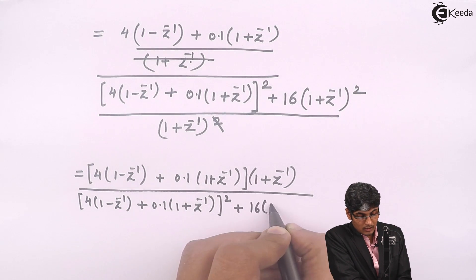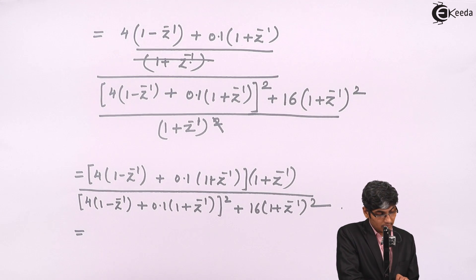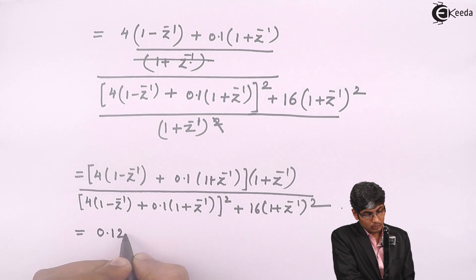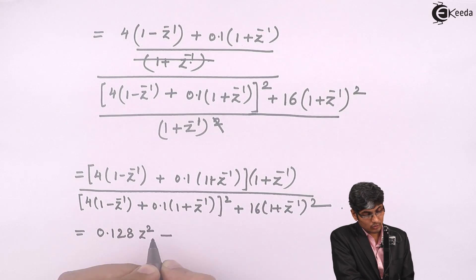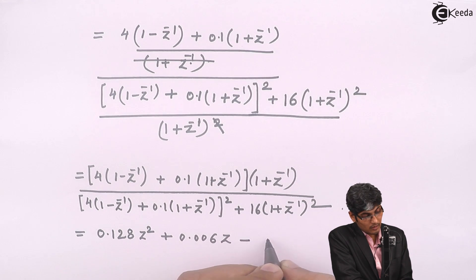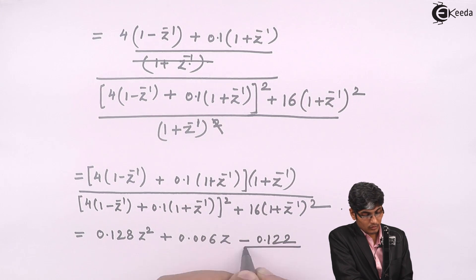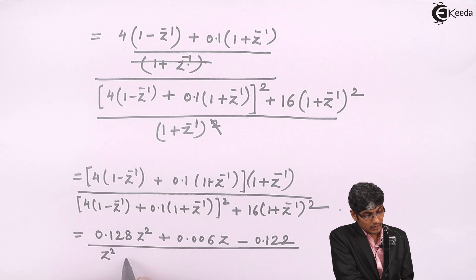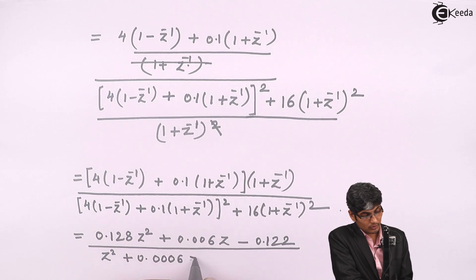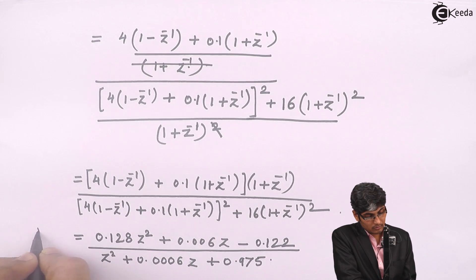And the final answer of this equation will be 0.128 Z inverse to Z square plus 0.006 Z minus 0.122 the whole divided by Z square plus 0.0006 Z plus 0.975 which is my H of Z.